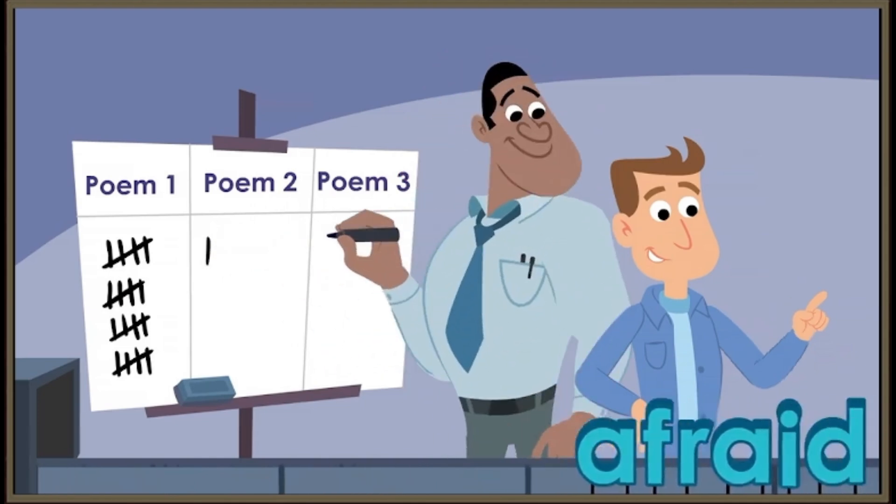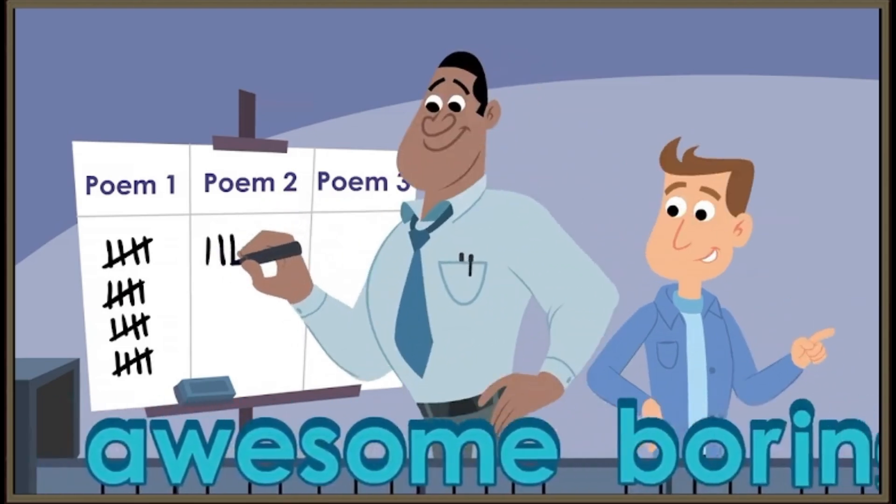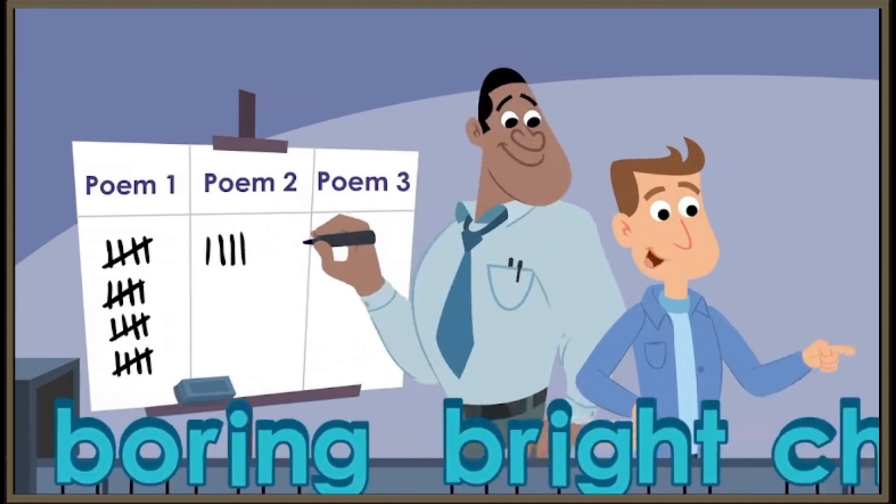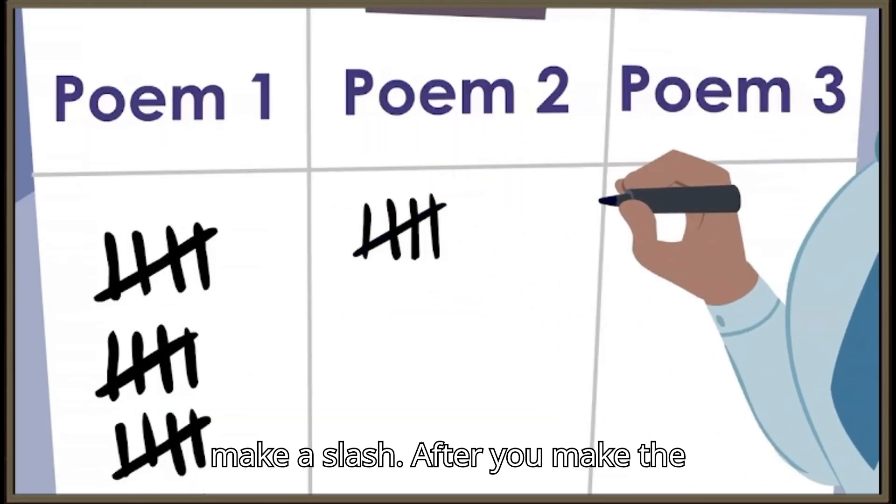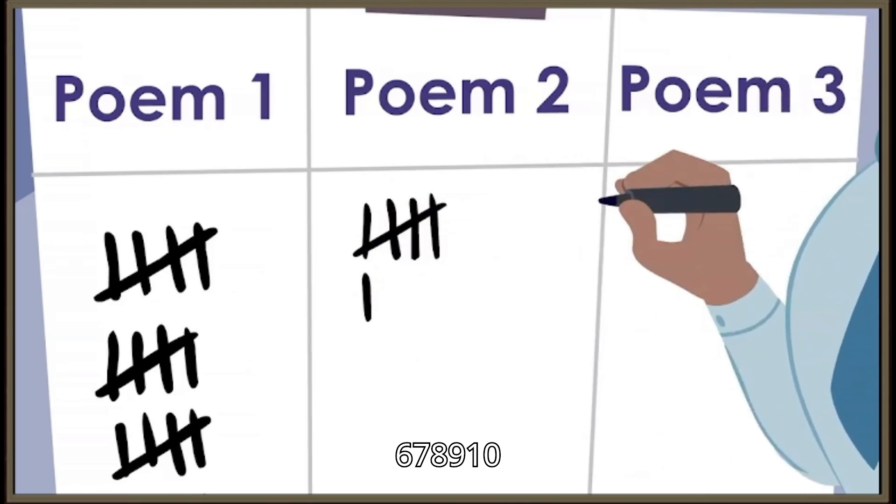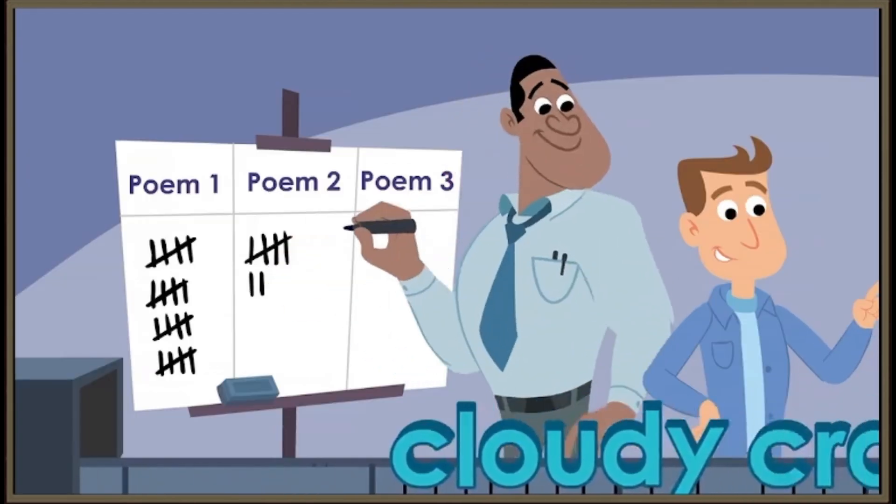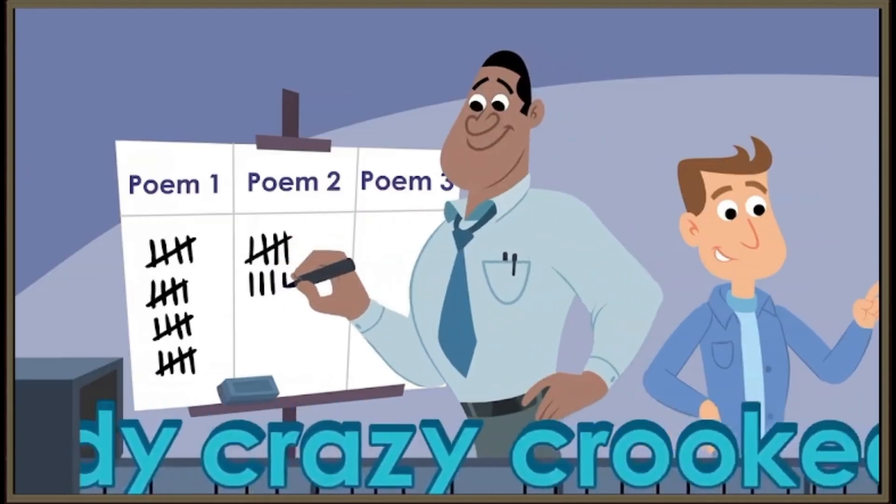One, two, three, four, five. Remember, every fifth mark, you make a slash. After you make the slash, you start a new group. Six, seven, eight, nine, ten. And thirty-three.